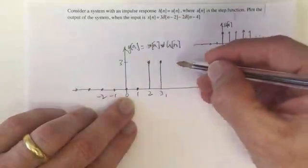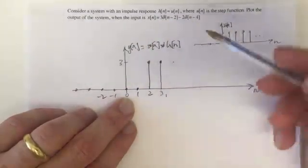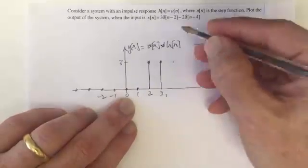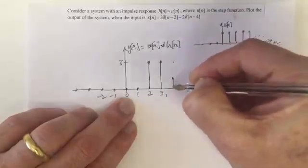The other impulse is negative so it subtracts from this and it's subtracting by 2, so it takes us down to a height of 1. And forevermore that is going to be the case because this impulse response keeps going from both of these impulses.